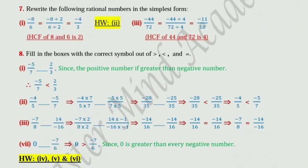Sum number 7: rewrite the following rational numbers in the simplest form. First one: minus 8 upon 6. Students, please pay attention. The HCF of 8 and 6 is 2, so divide numerator and denominator by 2 — minus 8 divided by 2 upon 6 divided by 2 is equal to minus 4 upon 3. Third one: minus 44 upon 72. Here HCF is 4, so divide numerator and denominator by 4 — minus 44 divided by 4 upon 72 divided by 4 is equal to minus 11 upon 18.